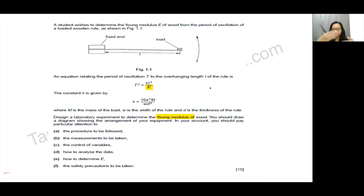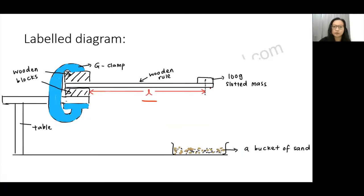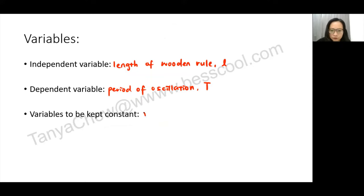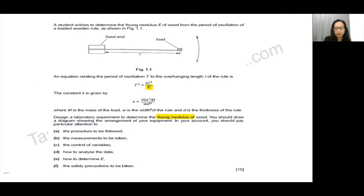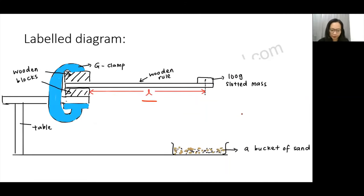For variables to be kept constant — if the equation is more complicated, you will have more to write here. From the equation, the width of the ruler W, the thickness of the ruler D, and the mass of the slotted mass m must all be kept constant. Since the question already defines the symbols, I can just write W, D, and m without further explanation. I am using 100 grams as shown in my diagram.